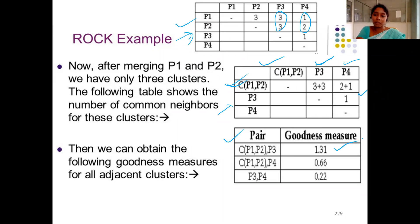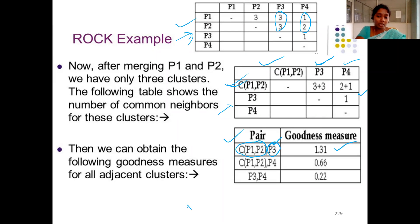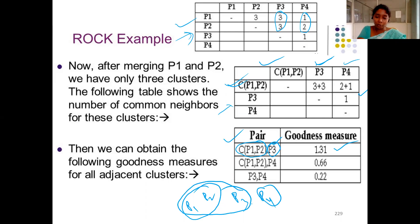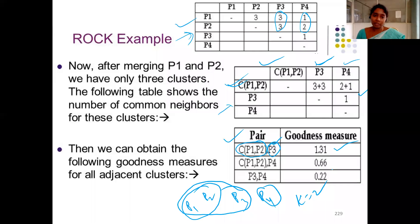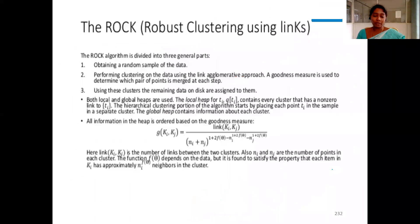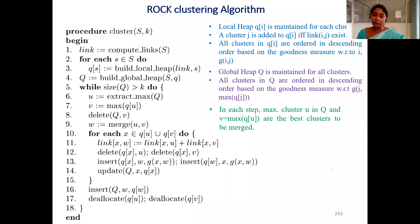After updating the matrix and calculating new goodness of measure values, the highest value corresponds to clustering C1 (which is P1 and P2) with P3. So in the next iteration, I cluster P1, P2, and P3 together, leaving P4 as the only remaining point. Now there are two clusters total. According to the given conditions, the example asks to generate only two clusters, so I can stop the process here. This is how clusters are generated using the ROCK algorithm. The systematic algorithmic procedure will be discussed in the next class.